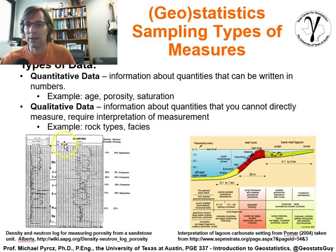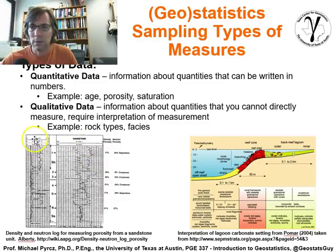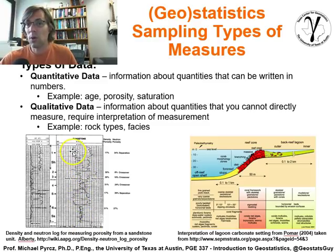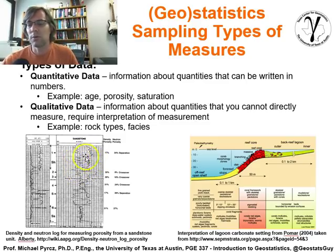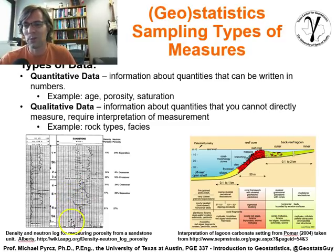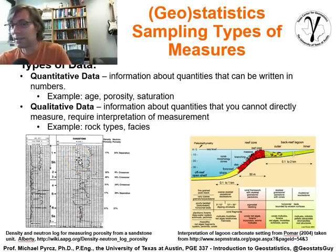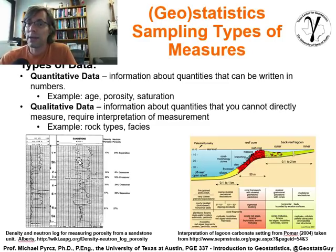Looking at a well log, we have gamma ray, spontaneous potential — we can look at actual numbers from the subsurface. That's quantitative. As soon as we say 'this is sandstone' or 'this is a certain rock type' — dullstone, wackestone, or boundstone if we're in carbonaceous reservoirs — we now have qualitative data. I'm not suggesting qualitative data is not valuable; I'm just suggesting that it has a layer of interpretation, and we need to understand the uncertainty related to that interpretation.